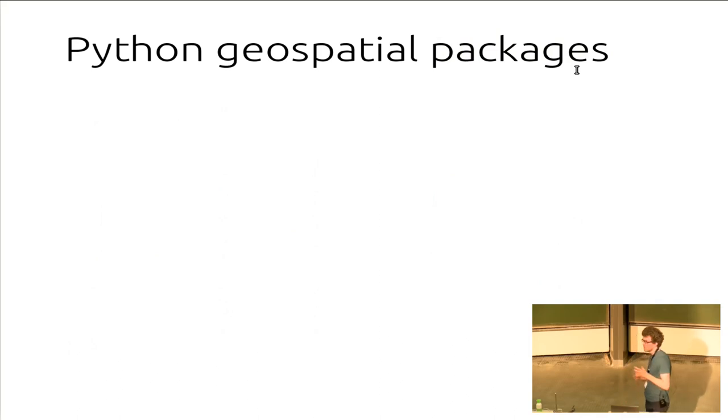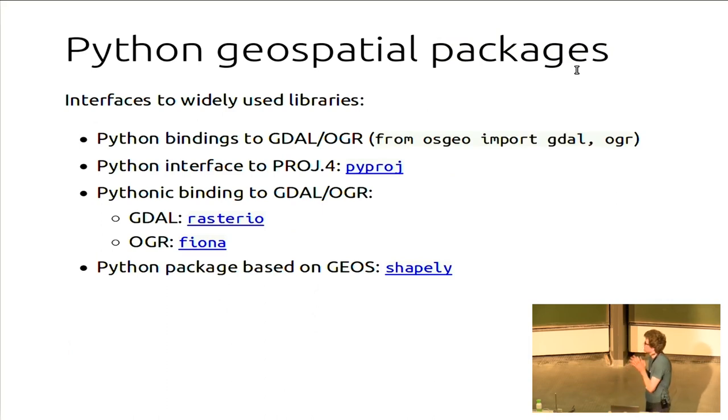The Python, the base Python Geospatial Packages are often interface to those libraries. We have the Python bindings for GDAL. Another one that I didn't mention is PROJ for conversions of projection systems. But the Python bindings to GDAL are not that Pythonic. They are rather close to the C API. So, we have some more Pythonic libraries, both started by Sean Gillies, which is RasterIO to work with raster data, Fiona for vector data. And then Shapely, which is based on the GEOS library.